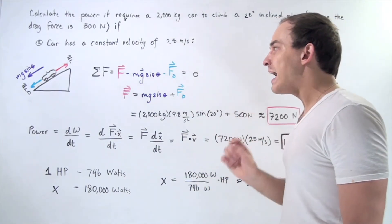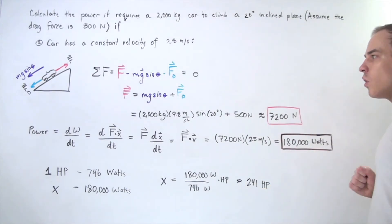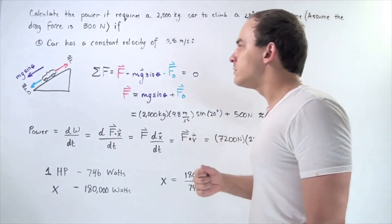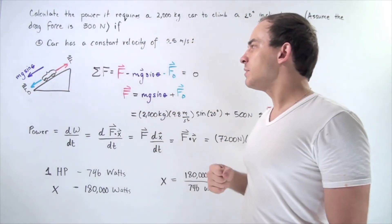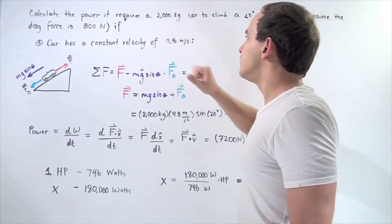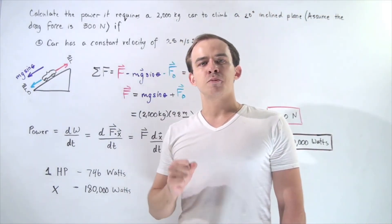Our engine and the car should have at least this much horsepower for it to be able to climb this inclined plane of 20 degrees at a constant velocity of 25 meters per second.